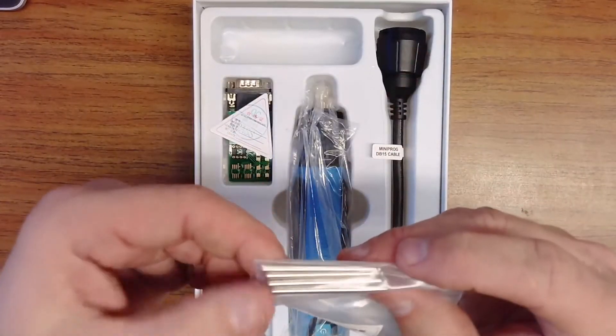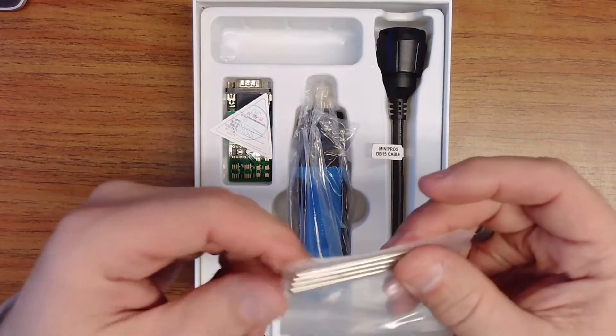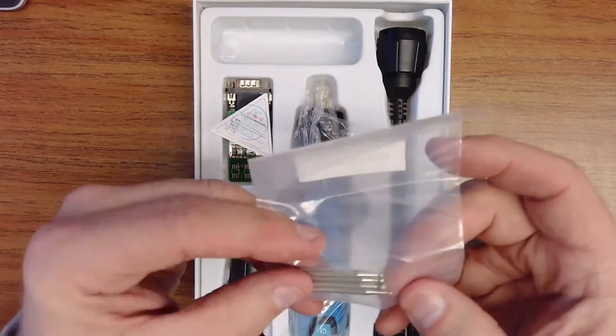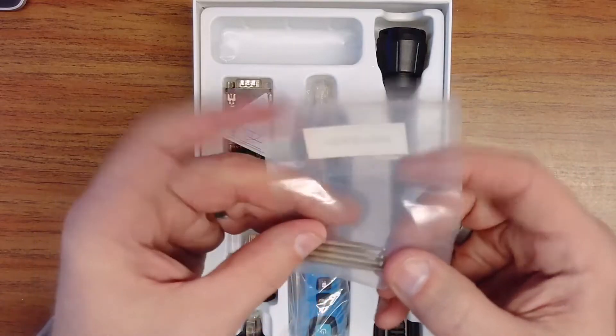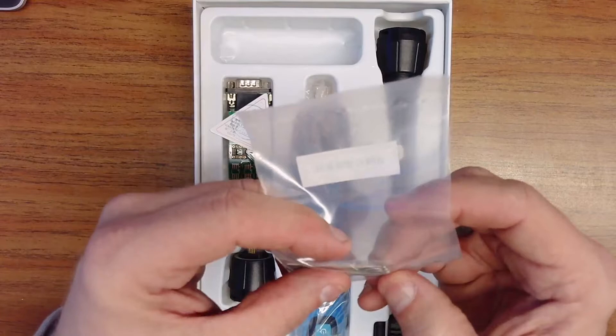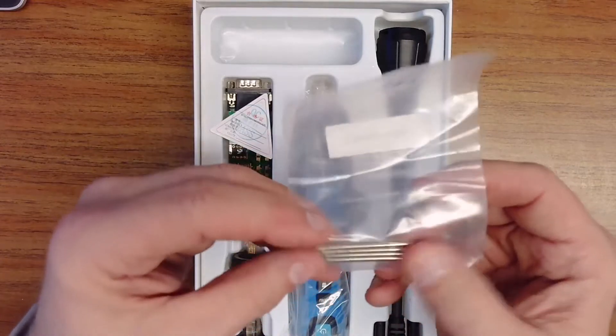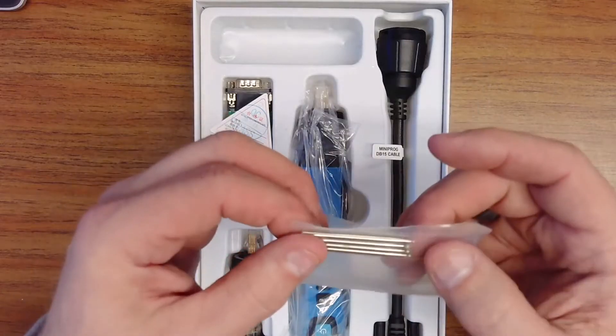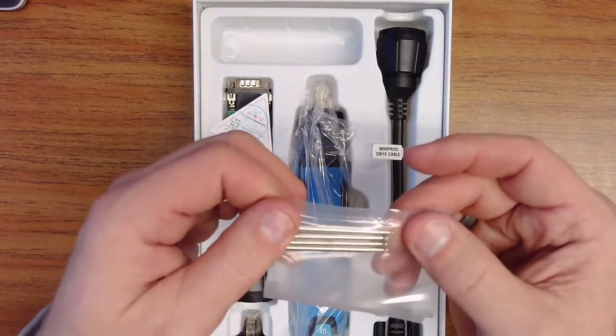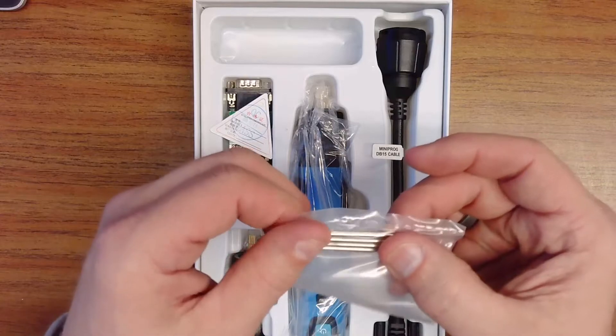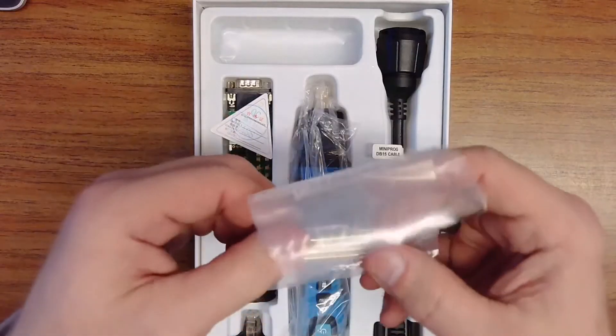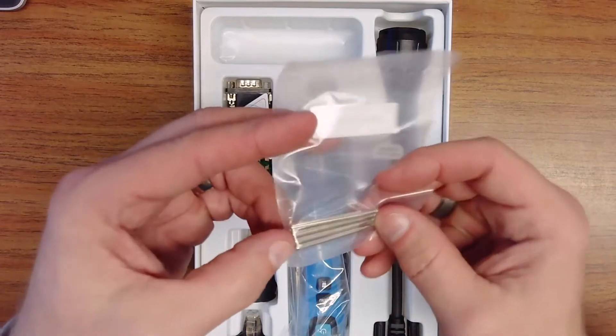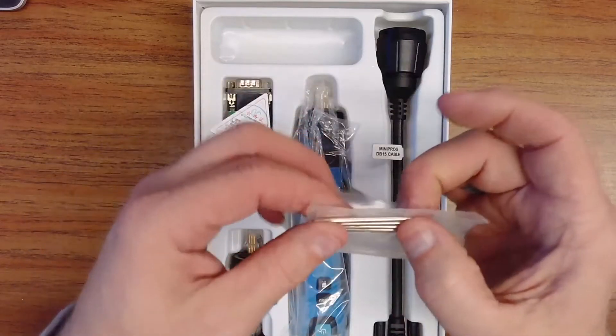These appear to be maybe PCB cleaners that you would use in a Dremel type tool. Not exactly sure, but looks like they're for cleaning the PCB board. If that's what X-Horse intends these for, I would recommend everyone to be extremely careful using them. Especially if you're using them in a motorized tool like a Dremel, you could cause a lot of damage to a printed circuit board. I haven't seen the instructions for this yet, so they may have another purpose for these. So let's see if we can uncover what that is later.